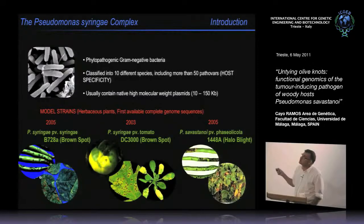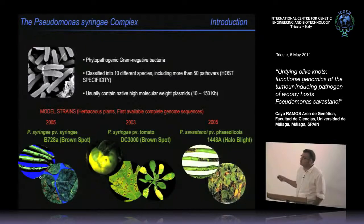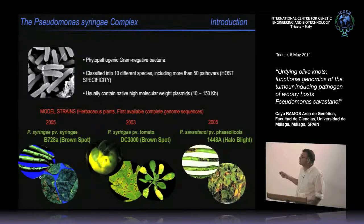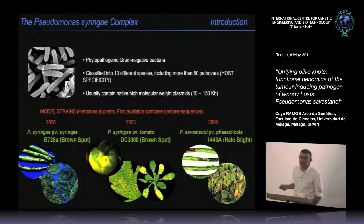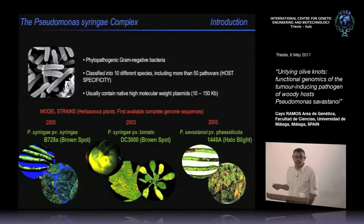Model strains of the Pseudomonas syringae complex include mainly bacteria that infect herbaceous plants, like Pseudomonas syringae pathovar syringae causing brown spot of bean, pathovar tomato infecting Arabidopsis, and pathovar phaseolicola producing halo blight on beans. These three pathovars had complete genome sequences published between 2003 and 2005. Working with herbaceous plants is simpler than with woody plants, especially without greenhouse facilities.